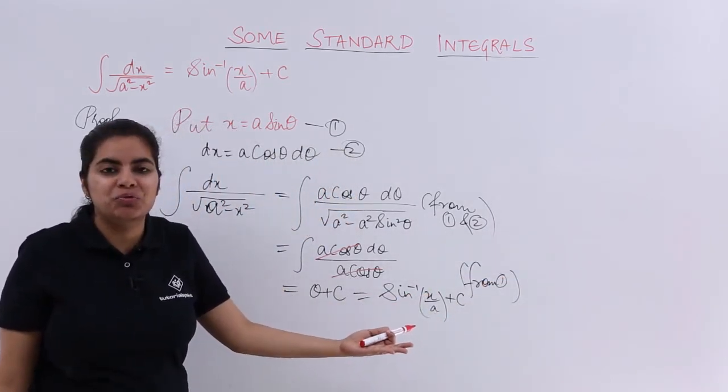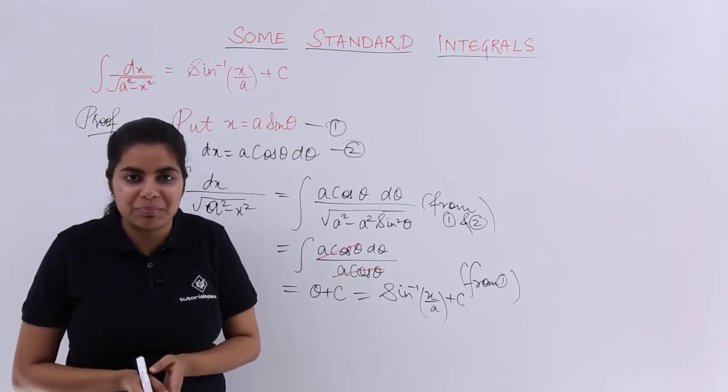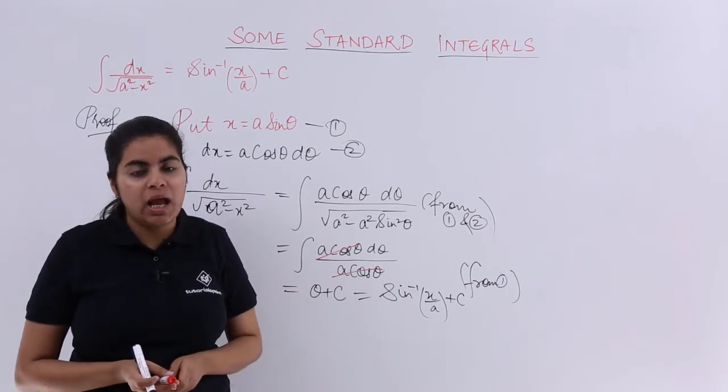And that is from my equation number one, and that is what I needed to prove - that the value that we have for dx upon under root a square minus x square integral is sine inverse x upon a plus c.